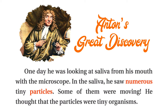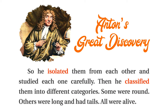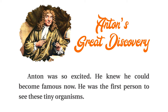One day, he was looking at saliva from his mouth with the microscope. In the saliva, he saw numerous tiny particles. Some of them were moving. He thought that the particles were tiny organisms. So, he isolated them from each other and studied each one carefully. Then, he classified them into different categories. Some were round. Others were long and had tails. All were alive. Anton was so excited. He knew he could become famous now. He was the first person to see these tiny organisms.